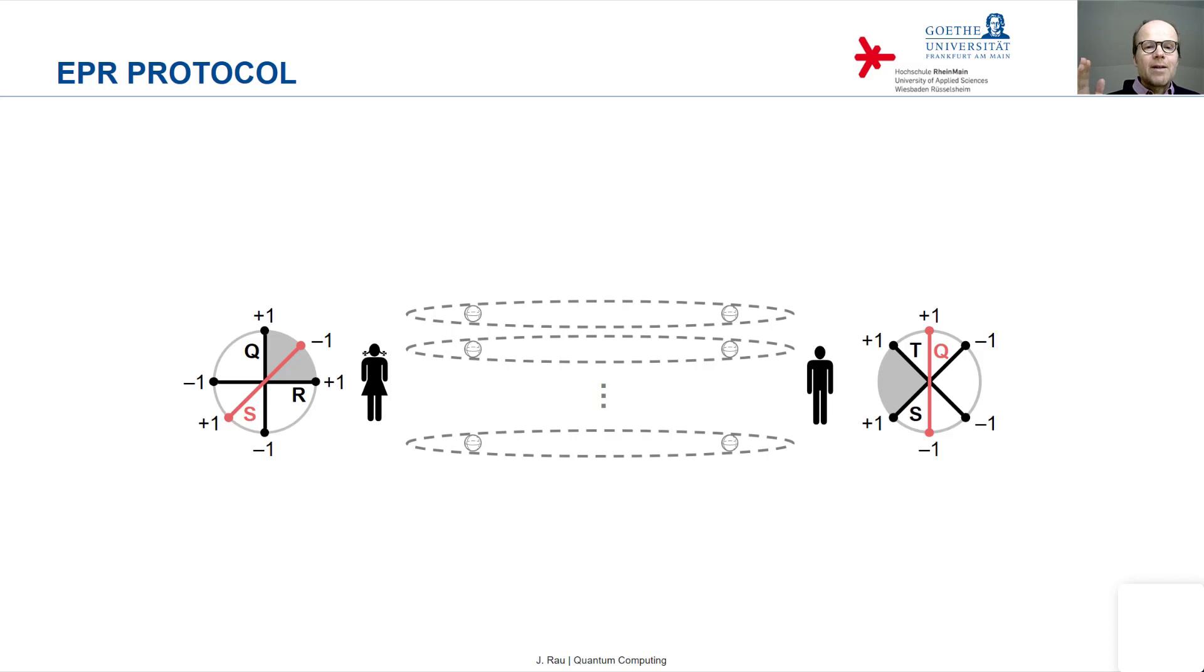So it could happen that by accident, they both measure Q or they both measure S. These are the two possibilities.